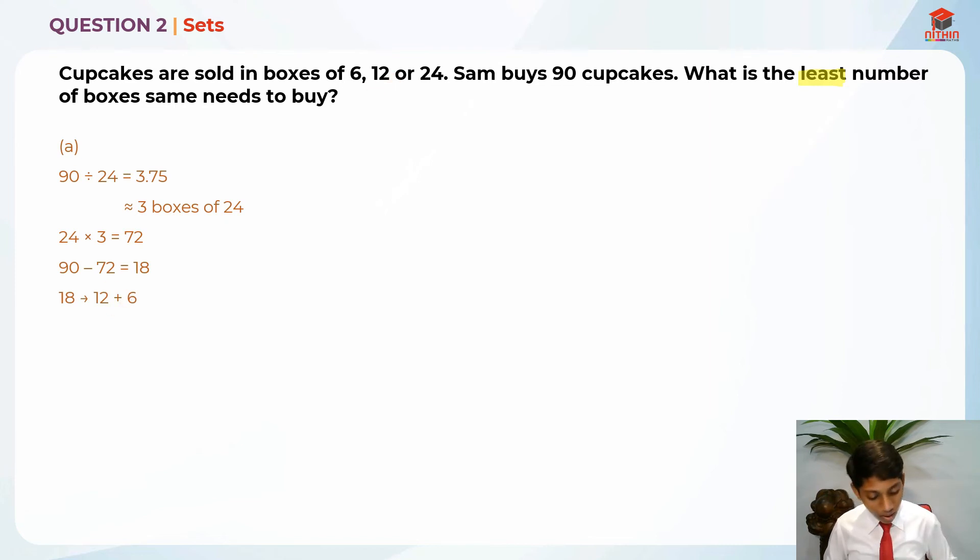There are 3 boxes over here, 1 box over here, and 1 box over here. So the least number of boxes is 3 plus 1 plus 1, which gives us 5 as the final answer.